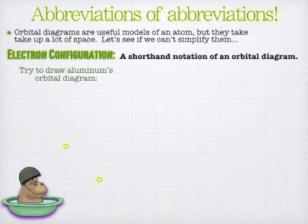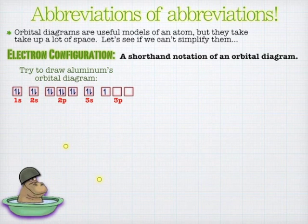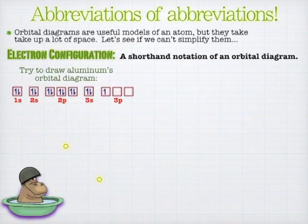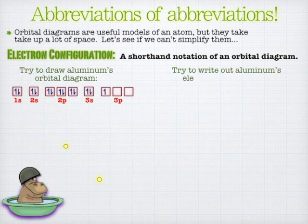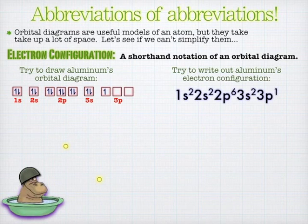Welcome back. So aluminum's orbital diagram — there are 13 electrons you need to account for there. Just keep bringing out orbitals and subshells until you have enough. You'll need to bring out the 1s, the 2s, the 2p, the 3s, the 3p. And even though there's only one electron in the 3p, the entire 3p comes out. That gives you 2, 4, 6, 8, 10, 12, 13 electrons. And so the electron configuration for that would be 1s², 2s², 2p⁶, 3s², 3p¹.